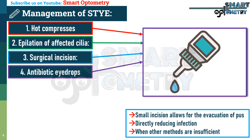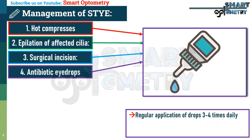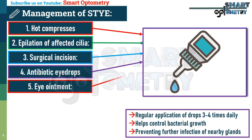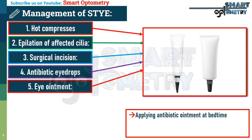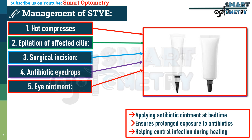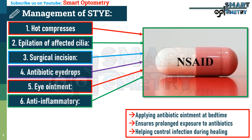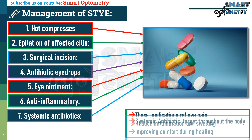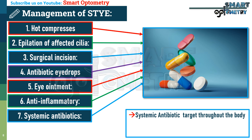Fourth, antibiotic eye drops — regular application of antibiotic drops such as ciprofloxacin or moxifloxacin, 3-4 times daily, helps control bacterial growth and prevents further infection of nearby glands. Fifth, antibiotic eye ointment — applying ciprofloxacin or moxifloxacin ointment at bedtime ensures prolonged antibiotic exposure, helping control infection during healing. Sixth, anti-inflammatory and analgesic medications relieve pain, reduce inflammation, and improve comfort. Seventh, in severe or persistent cases, systemic antibiotics such as ciprofloxacin or cefixime target the infection throughout the body, preventing complications.